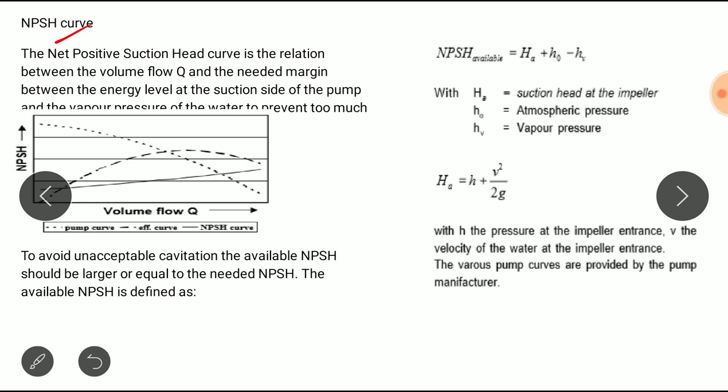The available NPSH should be larger or equal to the needed NPSH so that cavitation should not occur. This is the curve of NPSH versus volume flow rate, where we can see the pump curve, NPSH curve, and NPSH curve, and how will you get this NPSH.